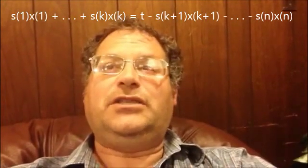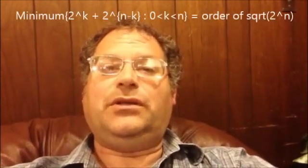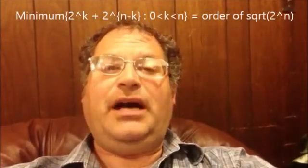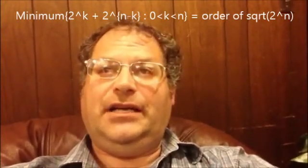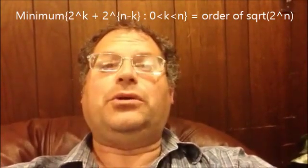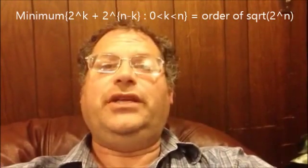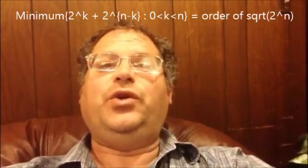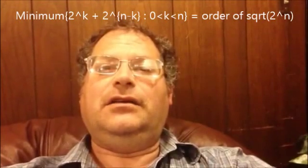Now, if we were to minimize the total number of possible expressions on each side of the equation, which is 2 to the k plus 2 to the n minus k, subject to k being between 0 and n, we get the order of the square root of 2 to the n possible expressions on the left-hand side of the equation, and the order of the square root of 2 to the n possible expressions on the right-hand side of the equation.